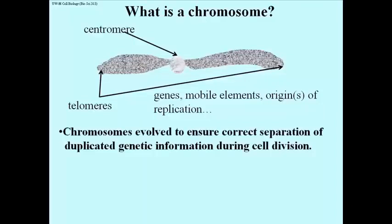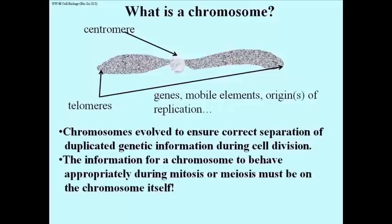Chromosomes evolve to ensure correct separation of the duplicated genetic information produced during the S phase in the life of a cell, and is going to be partitioned during mitosis, or during cell division. The information for a chromosome to behave appropriately during mitosis, or for that matter during meiosis, must lie on the chromosome itself. In fact, it must be some kind of genetic information. So what is this information?